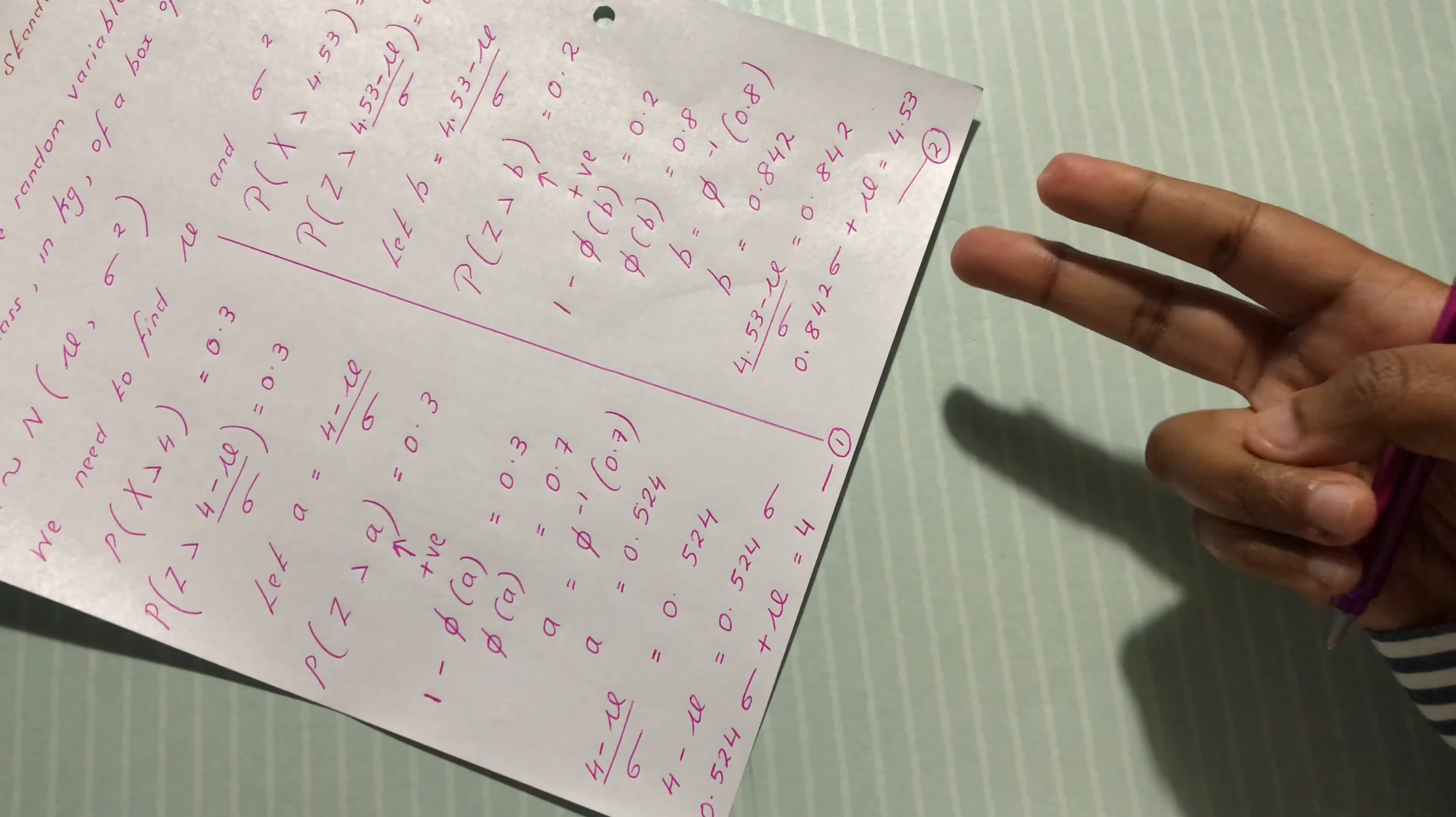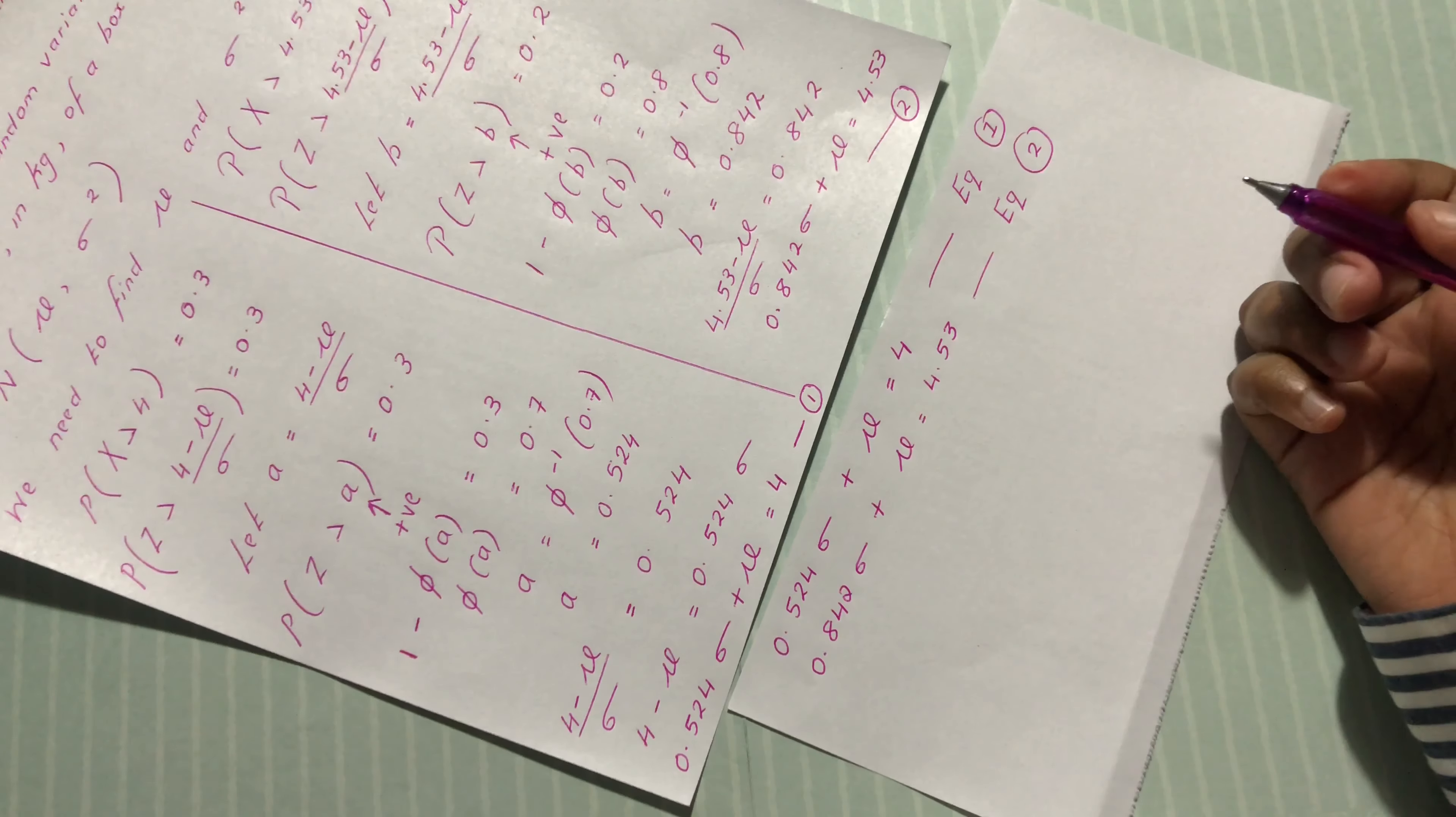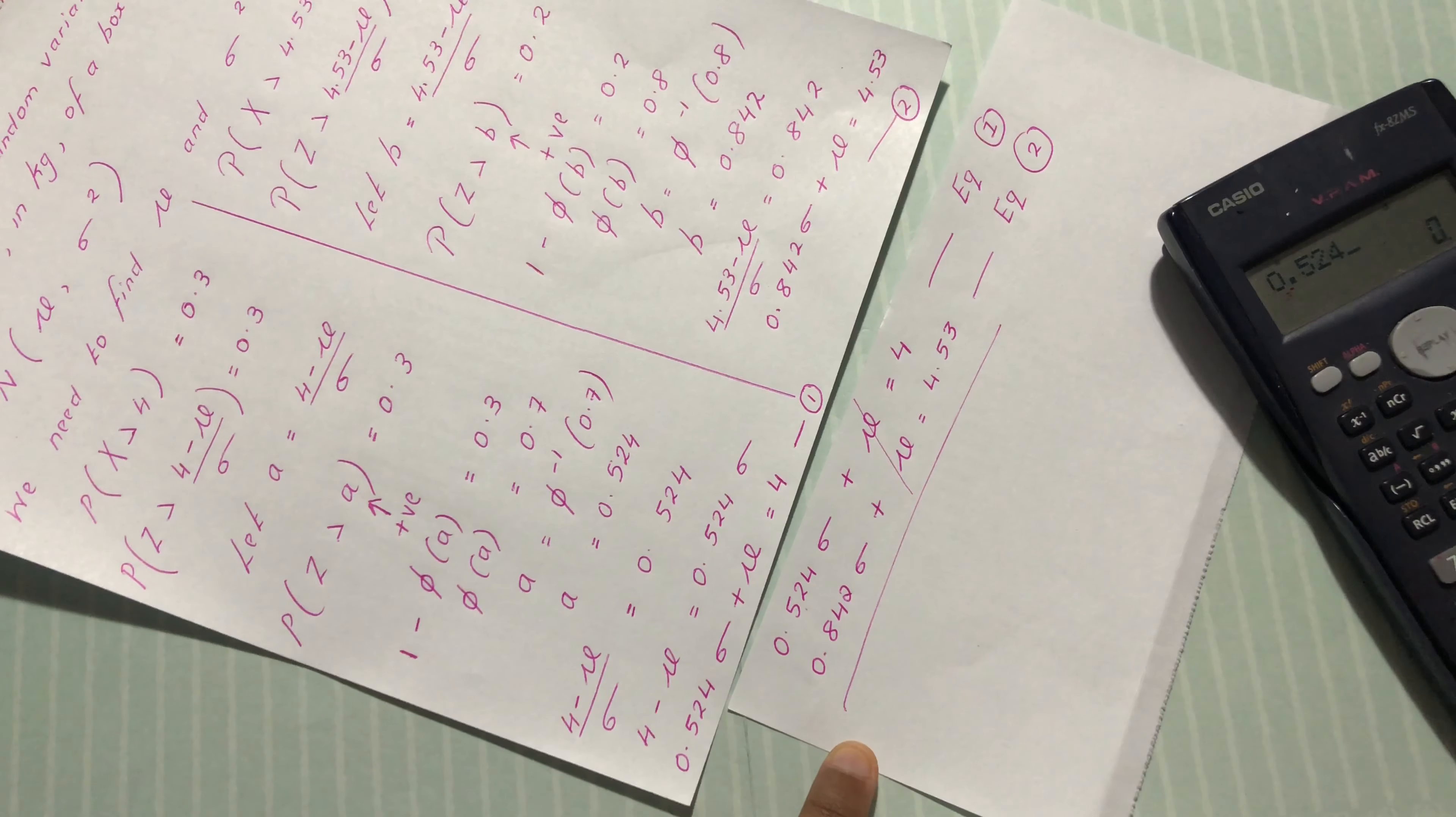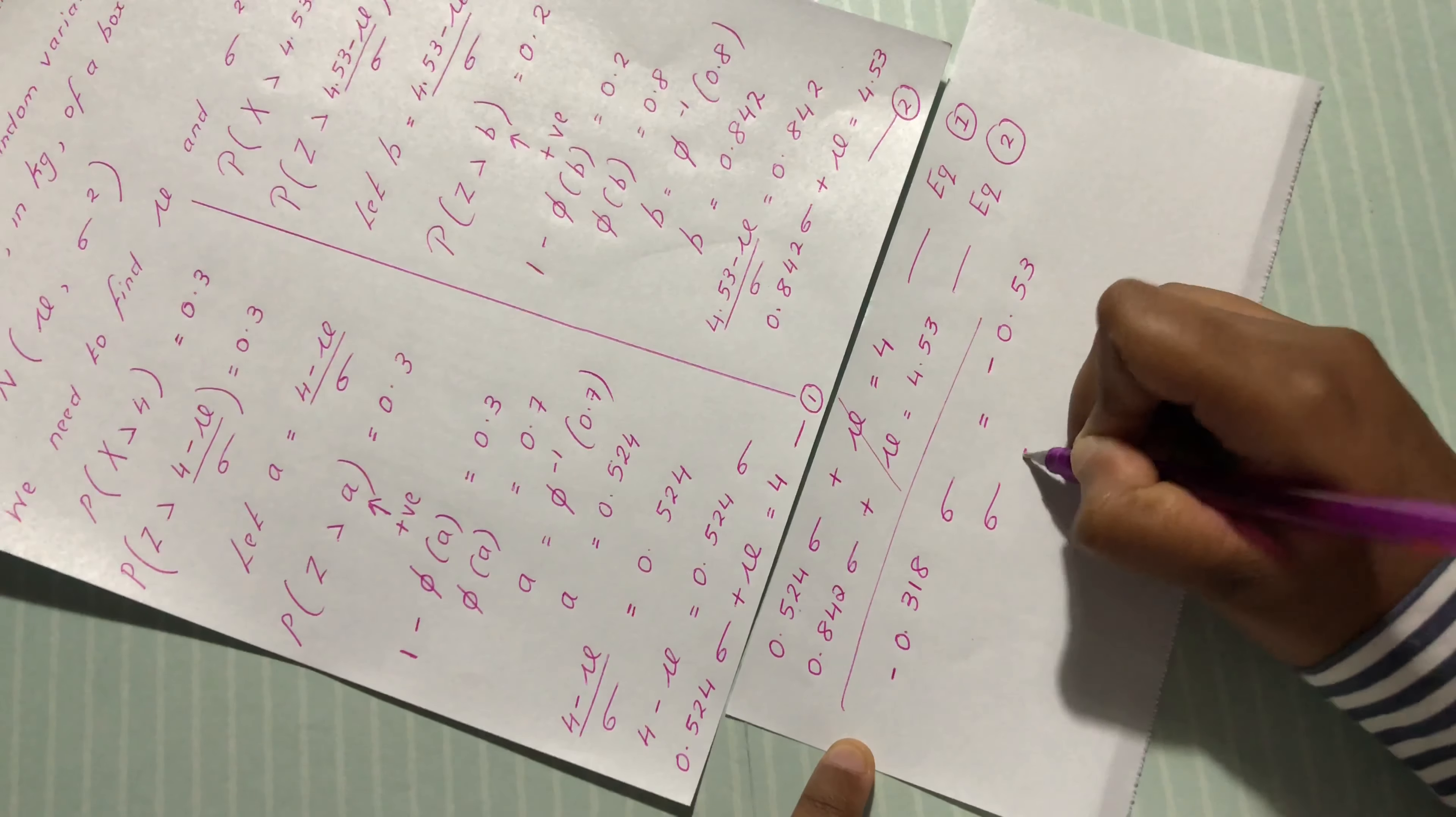Two equations, two unknowns. We are going to use the simultaneous equation to find mu and sigma. This is equation 1, this is equation 2. We are going to use the elimination method to eliminate mu. We have 0.524 minus 0.842, which is negative 0.318 sigma equals negative 0.53.